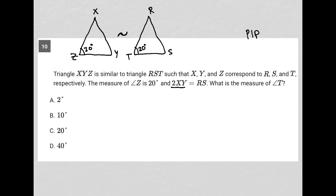Then it says 2 times XY is equal to RS. So if XY has a length of X, then RS would be 2X. All this is saying is that triangle RST is 2 times bigger than triangle XYZ — so basically every corresponding side length should be 2 times larger.